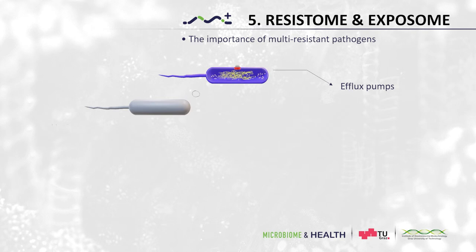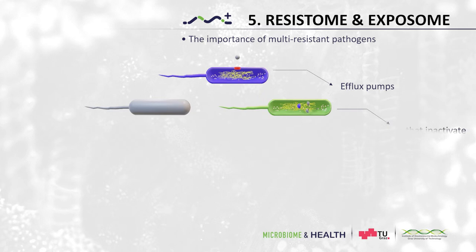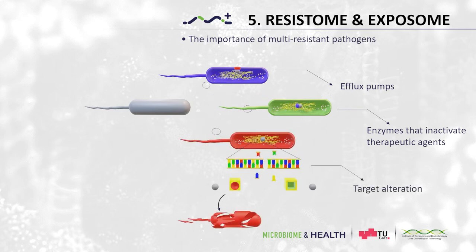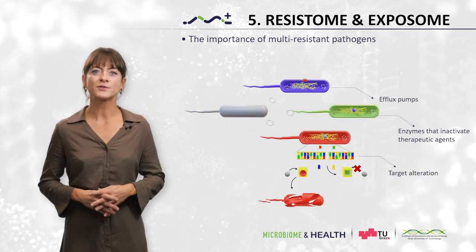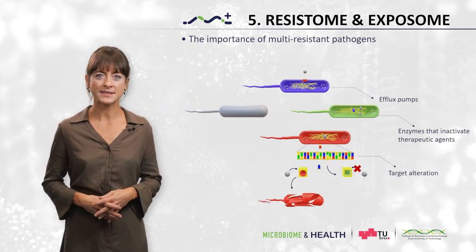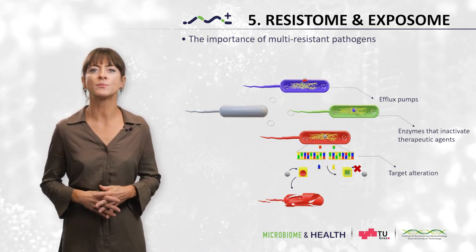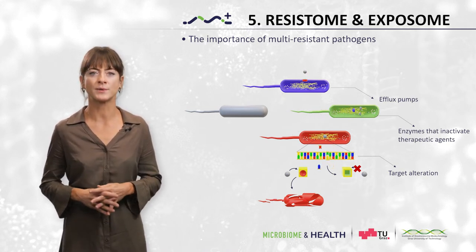Another resistance principle relies on substance inactivation by enzymes. Microbial cells can evolve to produce enzymes that inactivate therapeutic agents and thus render them useless. Another mechanism is based on target alteration, where mutation or replacement of a cellular target can completely eliminate the efficacy of the therapeutic agent. These are only some examples of a variety of resistance mechanisms, which can either occur alone or in distinct combinations within one microbial cell.